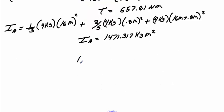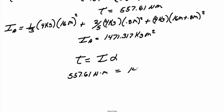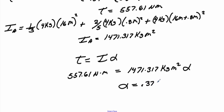Using torque equals moment of inertia times angular acceleration: 557.61 newton meters equals 1471.317 kilogram meters squared times angular acceleration, giving an angular acceleration of 0.379 radians per second squared. I hope that video was useful. Those are two problems solved using the equation that torque equals moment of inertia times angular acceleration.